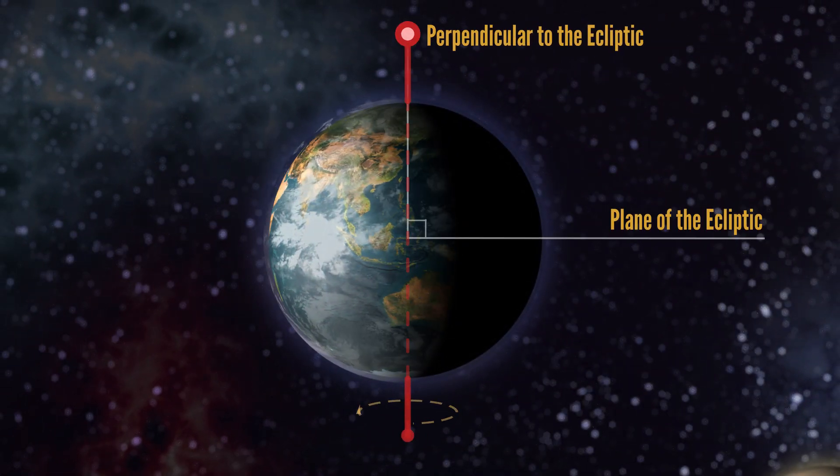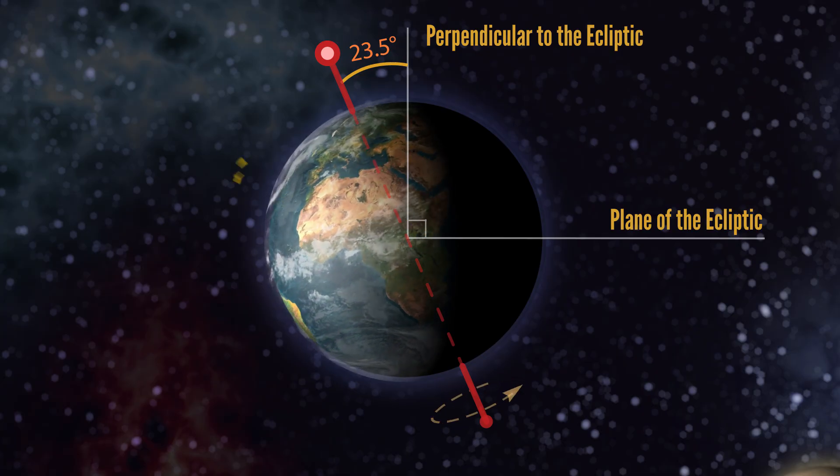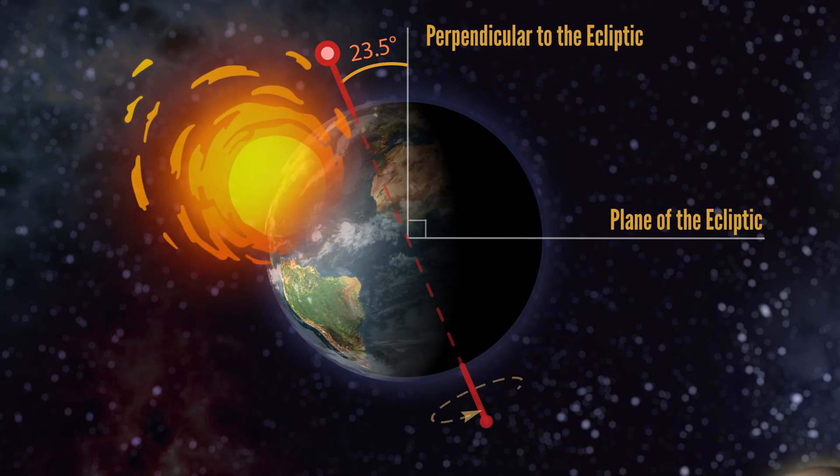All a planet needs to have them is a tilted rotational axis and an orbit. More direct sunlight on one hemisphere, that's summer. Less direct sunlight, that's winter.